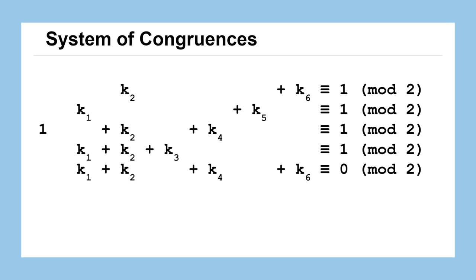We know that k1 plus k5 is congruent to 1 mod 2. 1 plus k2 plus k4 is congruent to 1. k1 plus k2 plus k3 is congruent to 1. We've got a lot of different equations here, but the good news is we have six unknowns, k1 through k6, and we have six equations or congruent statements that govern those relationships. If you remember from solving equations in any other math course, that should be enough for us to determine all the values of these unknowns.